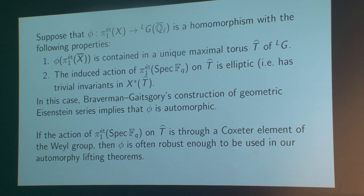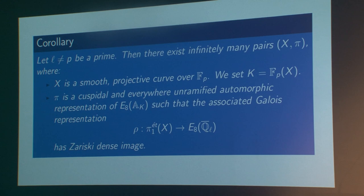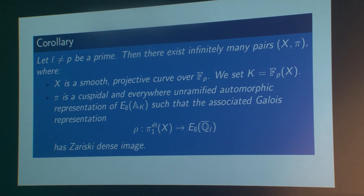There's one class of parameters that, on the one hand, we can prove to be universally automorphic, and on the other hand is suitable for use in our automorphic lifting theorem. As a corollary — an easy special case of our theorem but a nice indication of how we think about these things — one can find infinitely many pairs (X, π), where X is a smooth projective curve over 𝔽_p, k is its function field, and π is a cuspidal everywhere-unramified automorphic representation of E₈ of the Adeles of k, such that the associated Galois representation — which exists thanks to the work of V. Lafforgue — has Zariski dense image in the dual group. I really don't know any other way to construct examples like this except using our techniques. Thank you.